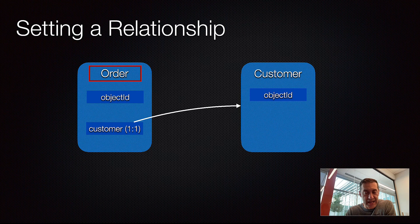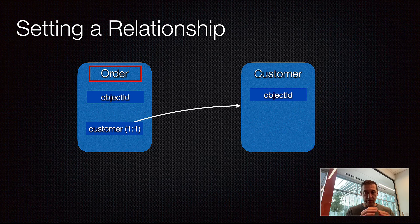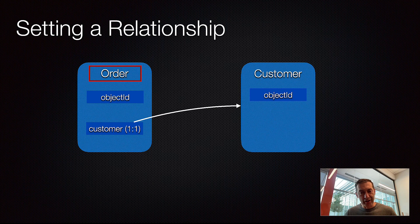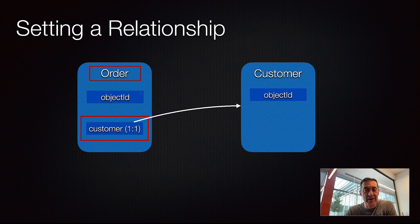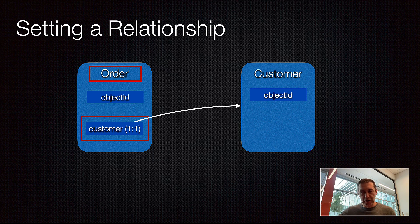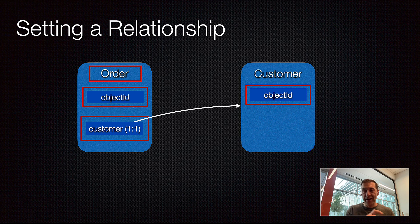First is the name of the parent table — the one that declares the actual relation column. Since the customer column is declared in the order table, the order table becomes the parent table. Objects in the parent table are parent objects, so the order is the parent object and the related customer is the child object. Second, you need to specify the relation column, which tells Backendless what relation you're talking about and what table it refers to. Third and fourth are the object IDs — one from the parent and one from the child.